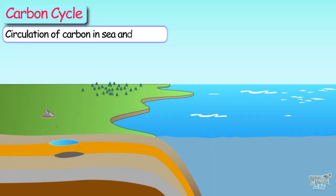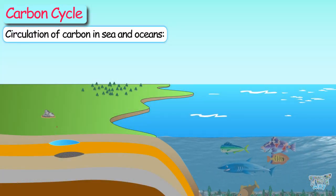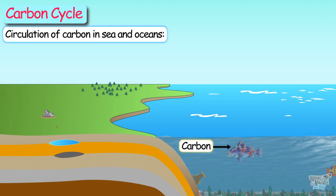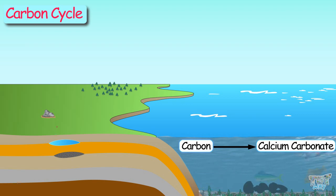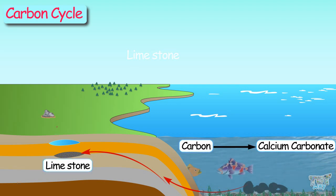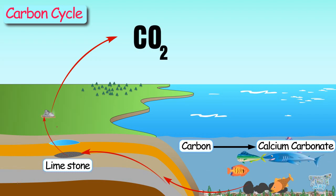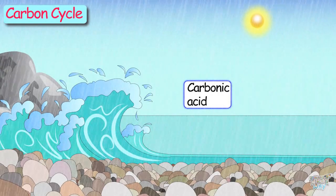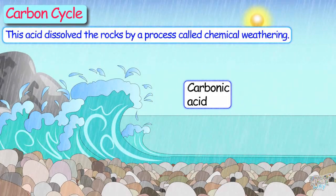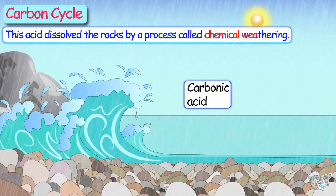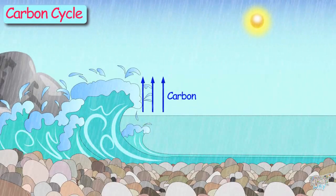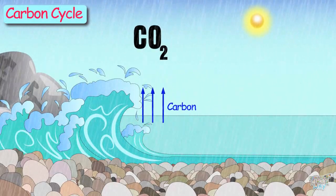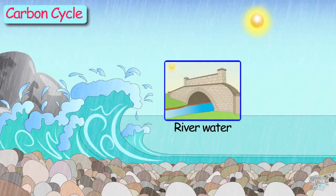Now let's look at the circulation of carbon in the seas and oceans. Aquatic life converts some of the carbon in their diet into calcium carbonate, which is used to make their shells. These shells eventually form a type of stone called limestone. When these stones are brought to the surface of the earth, they release carbon back into the atmosphere. Atmospheric carbon combines with water to form carbonic acid, and when it falls on the surface of rocks, it dissolves them by a process called chemical weathering. Carbon is then released back into the atmosphere as carbon dioxide gas, and also as dissolved carbon, which finds its way back into rivers and ultimately seawater.